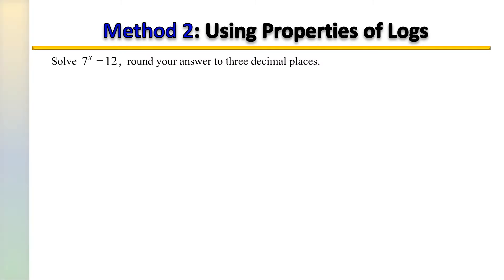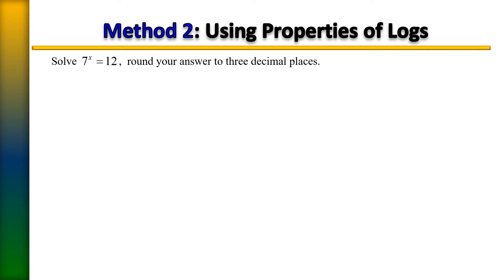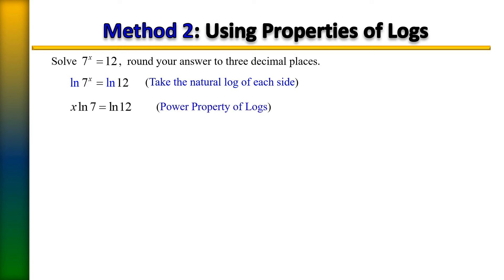I'm going to show you an alternative method for solving that same equation. This time let's use the properties of logarithms. The properties of logarithms allow us to take the natural log or the common log of both sides. So now we have the natural log of 7 to the x equals the natural log of 12. Our next step is to use the power property to bring that exponent x out in front of the log.